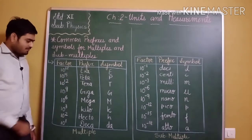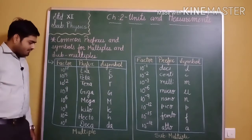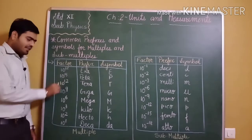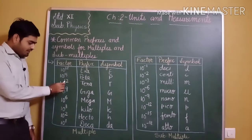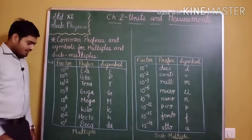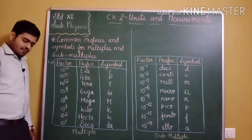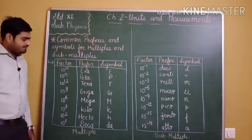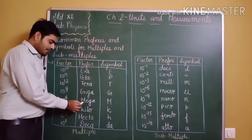Notice the pattern in the powers: 10 to the power 18, then 15, then 12 — there is a gap of 3 each time. So: 18, 15, 12, 9, 6, 3. After 3, the sequence continues as 2, 1, then we move to submultiples. The sequence in order is: exa, peta, tera, giga, mega, kilo, hecto, deka.